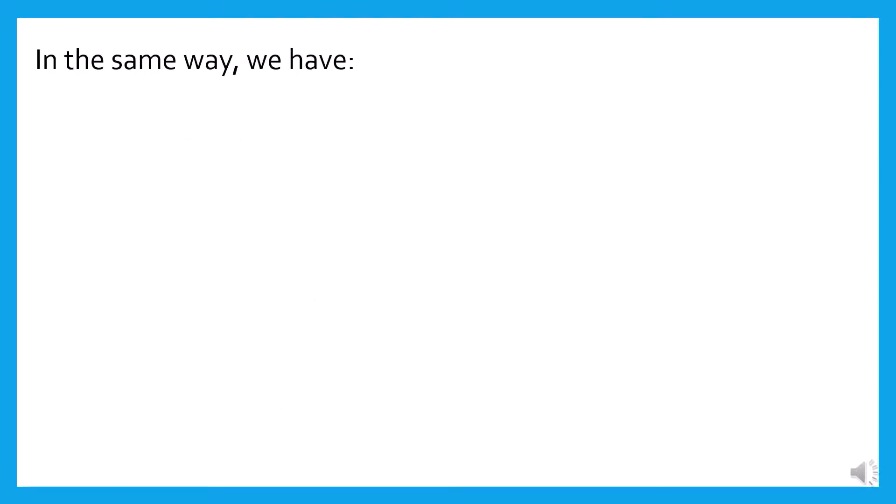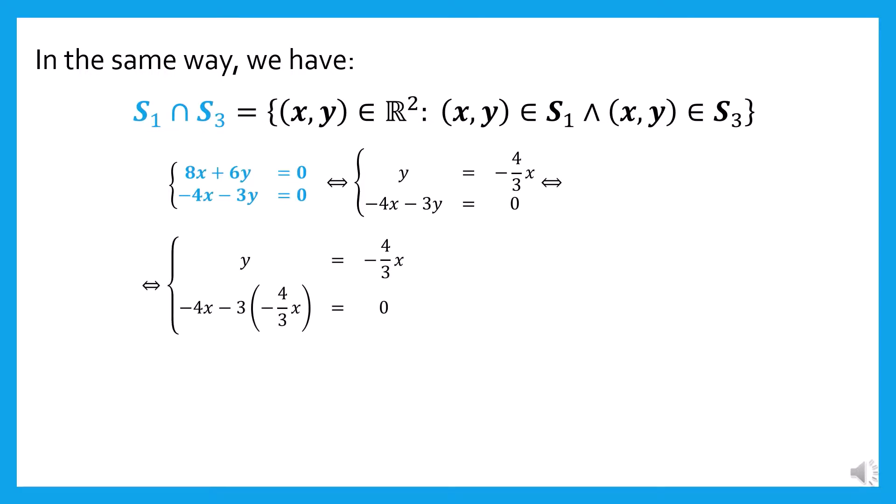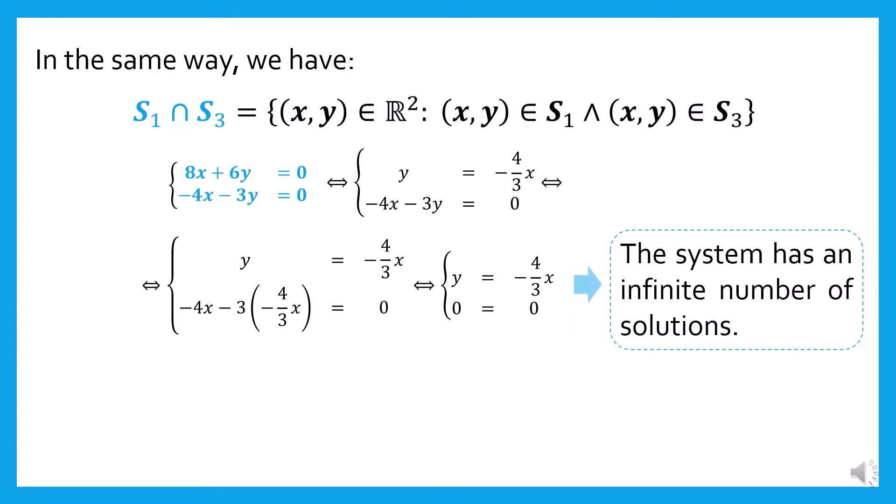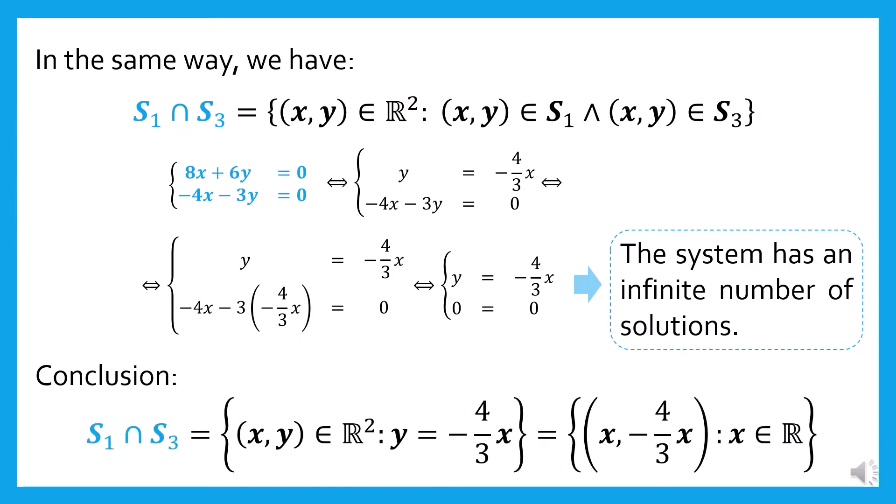In the same way, we have... In conclusion, the intersection of S1 and S3 is equal to the set of points where y equals negative four-thirds x, for all x in the real numbers.